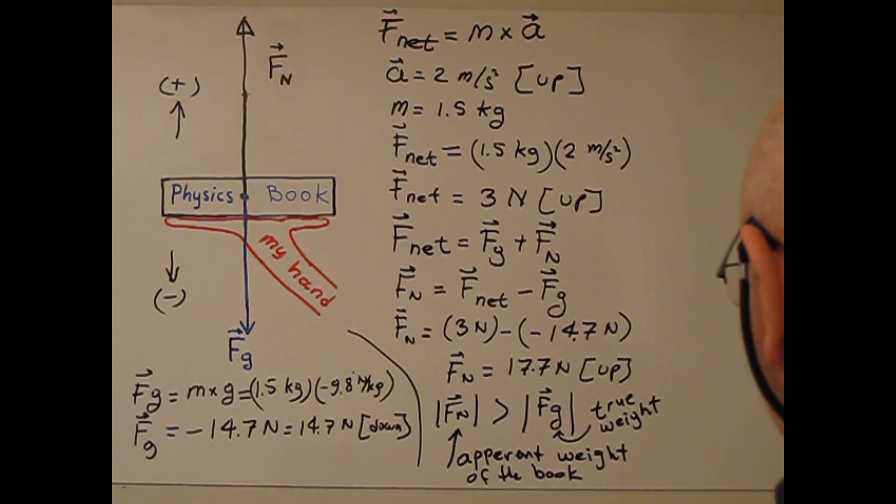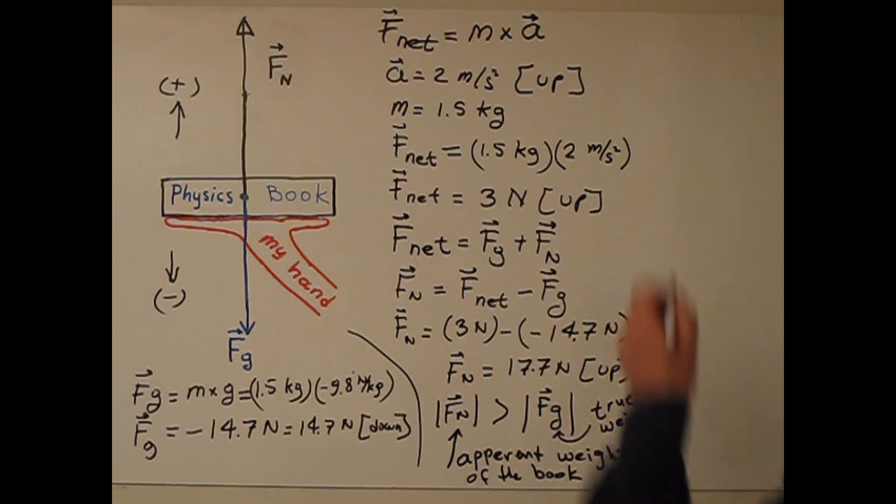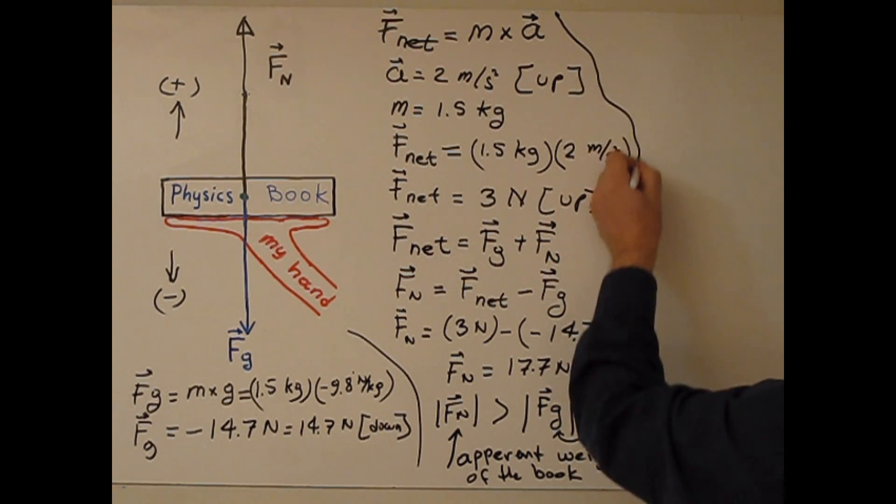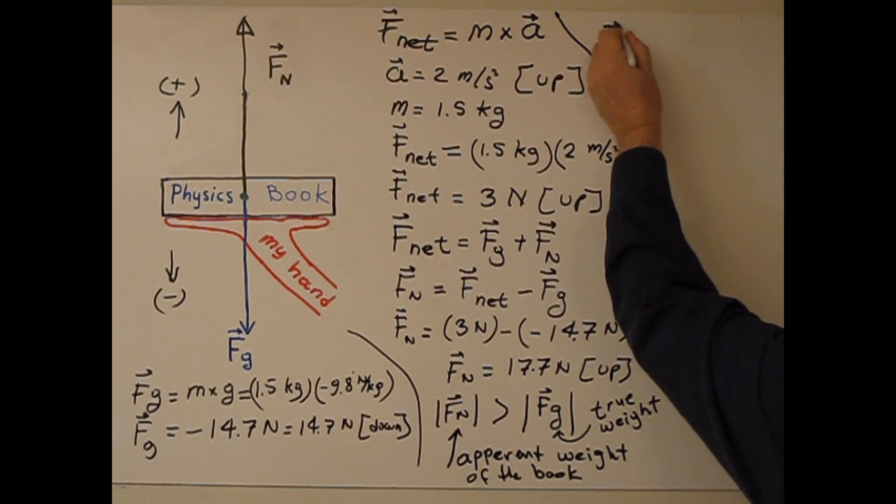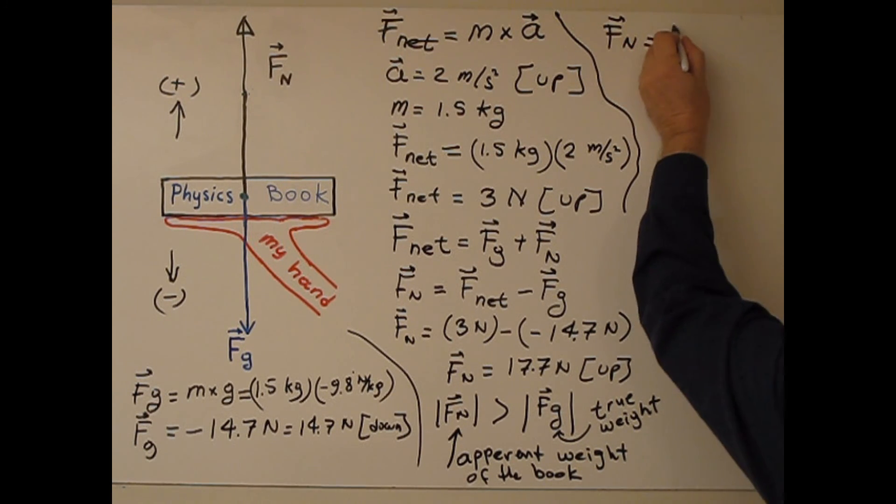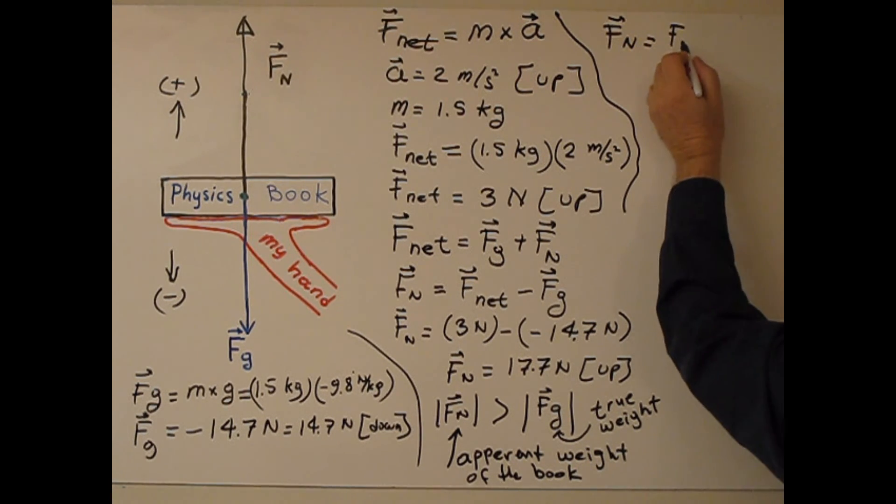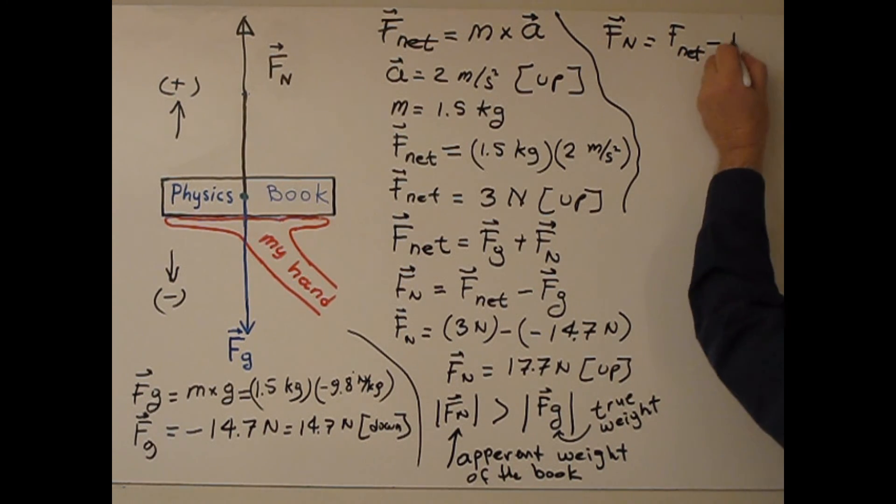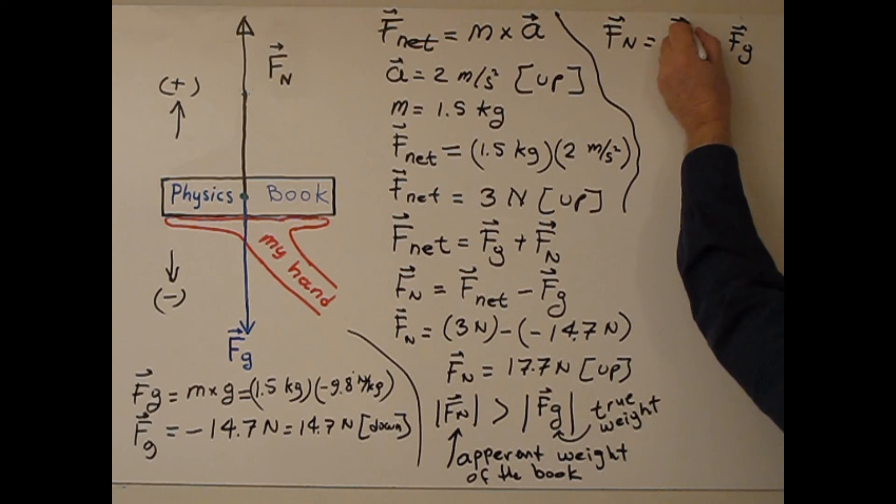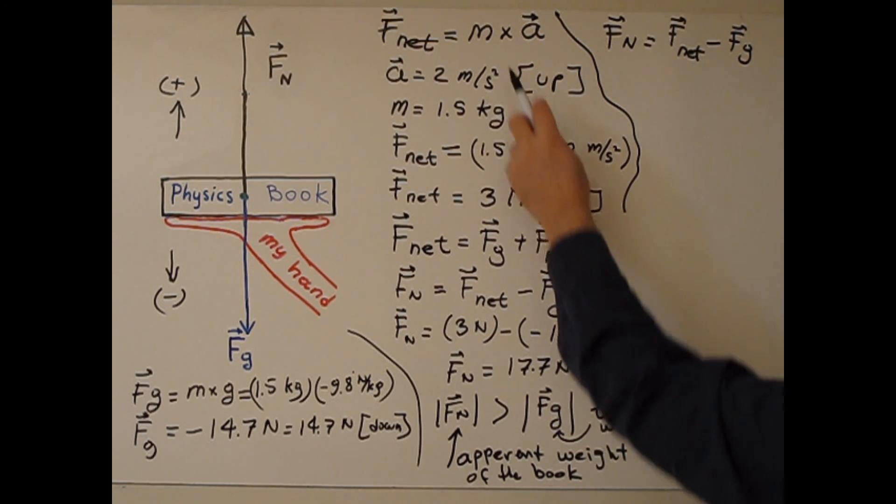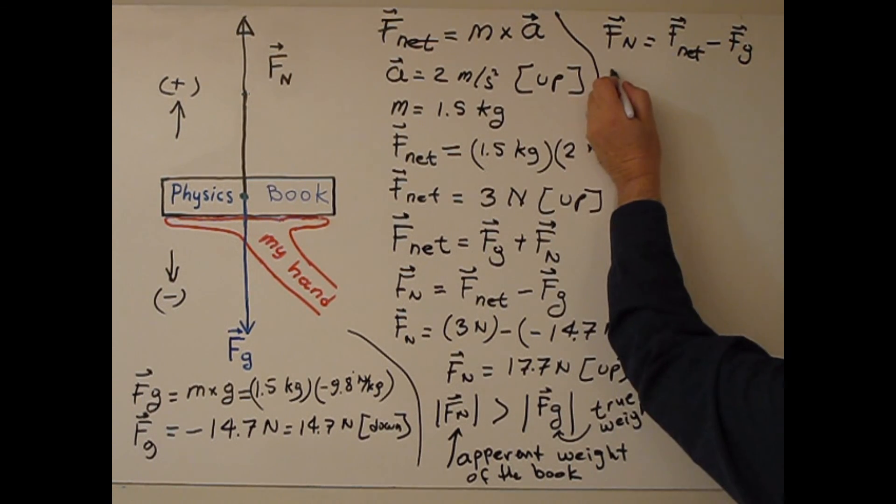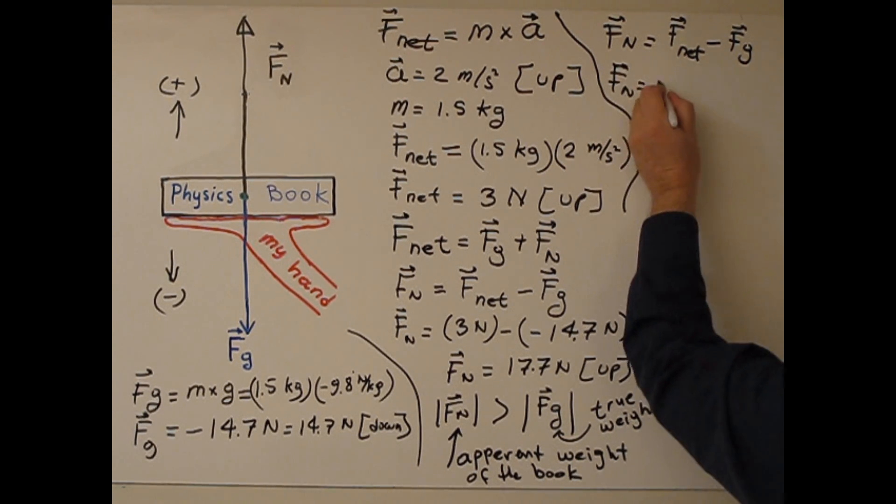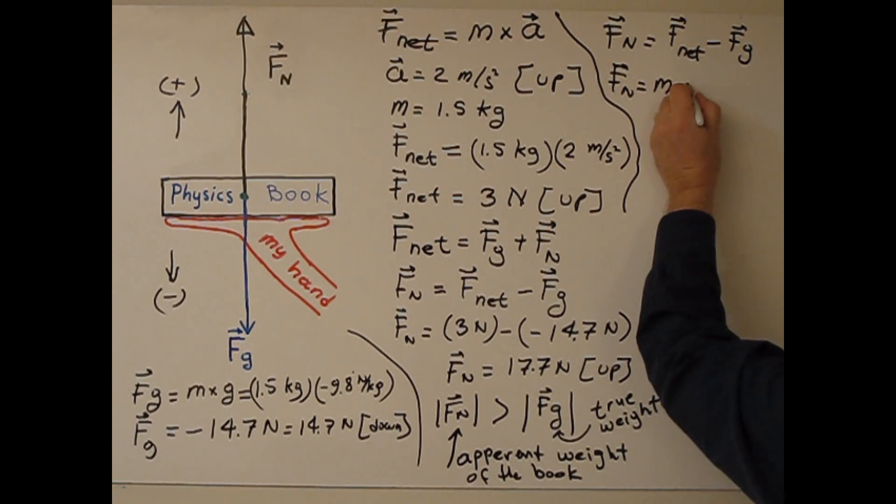But we can get the formula for apparent weight. So apparent weight of normal equal Fn minus Fg. So Fn is M times A. So again, F normal equal M times A.